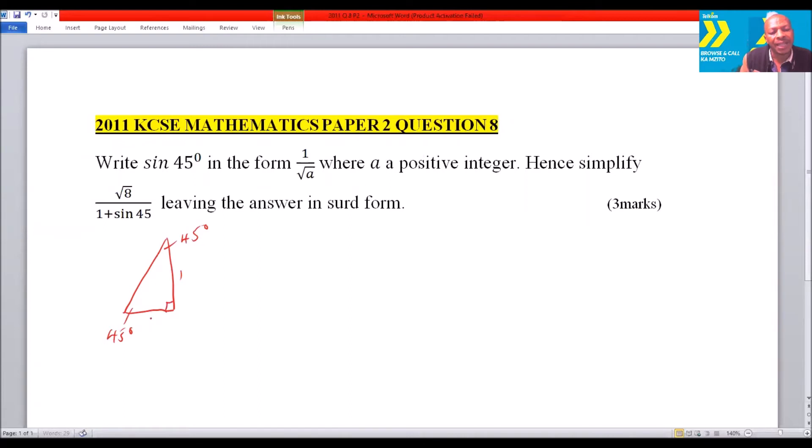So we say that side is 1, that is 1, and this is √2. So once you get that, you can now say sin 45°.